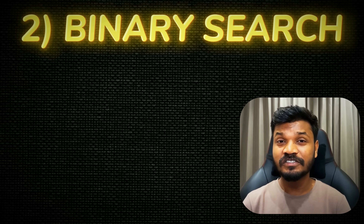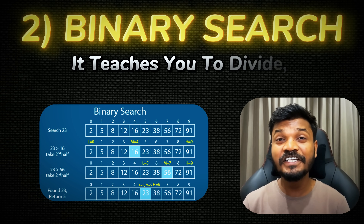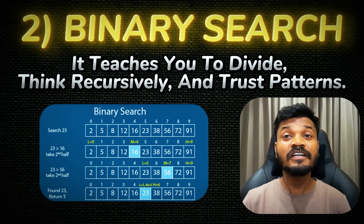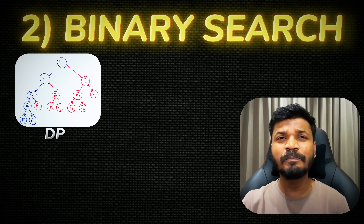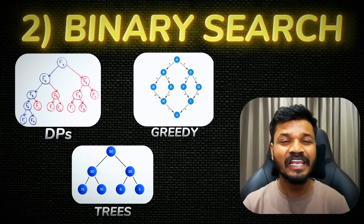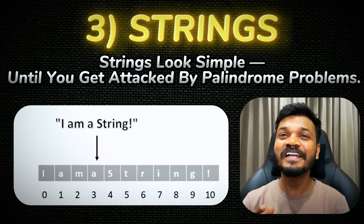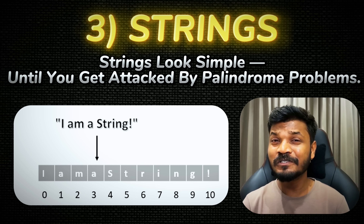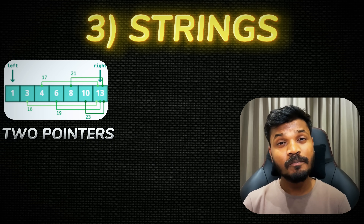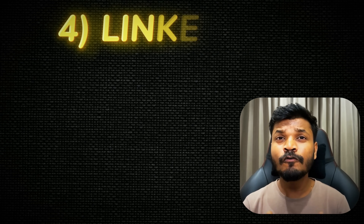Second: Binary Search. If arrays are the body, binary search is the mindset. It teaches you to divide, think recursively and trust patterns. You'll use it in DP, greedy, trees — and honestly in life too. Third: Strings. Strings look simple until you get attacked by palindrome problems. You'll start noticing little tricks: two pointers, palindromes, hash maps — they all start repeating. Fourth: Linked Lists. Most people hate this topic, but it's the first topic where you truly learn how memory and references work.